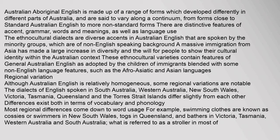Although Australian English is relatively homogeneous, some regional variations are notable. The dialects of English spoken in South Australia, Western Australia, New South Wales, Victoria, Tasmania, Queensland and the Torres Strait Islands differ slightly from each other, both in terms of vocabulary and phonology. Most regional differences come down to word usage. For example, swimming clothes are known as 'cossies' or 'swimmers' in New South Wales, 'togs' in Queensland, and 'bathers' in Victoria, Tasmania, Western Australia and South Australia.